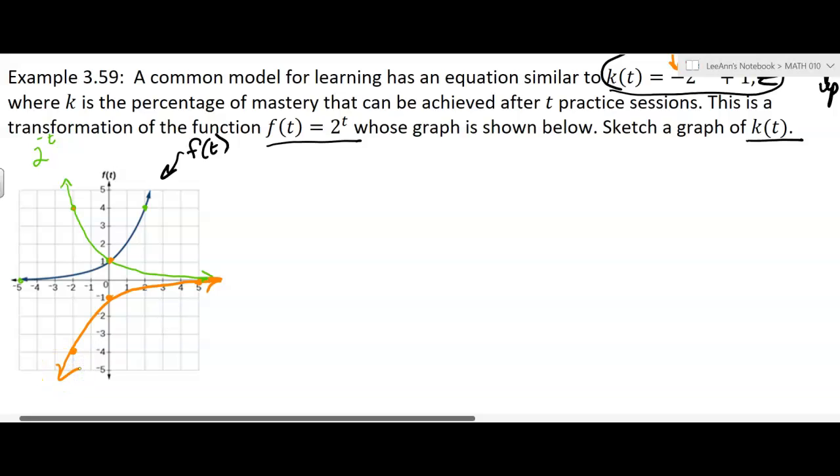Then that's going to be the reflection about the x-axis. So if I had to say, what's this function? It would be like g of x is equal to the opposite of 2 to the opposite of t, to the power of the opposite of t. So if you take each reflection one at a time, then it's not too bad.